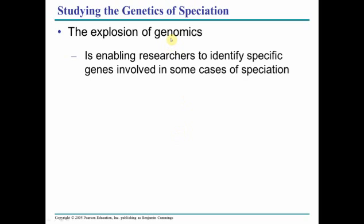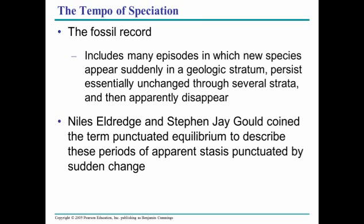Genomics has enabled us to study differences molecularly or in genes, and this is going to be the main driving force in how evolution is studied in years to come. A lot of what we know currently is from the fossil record, and we look at episodes where new species suddenly appear — such as the most talked-about one, the Cambrian explosion, where there are not many species for a while, and then in a certain strata a giant number of different species suddenly appear.